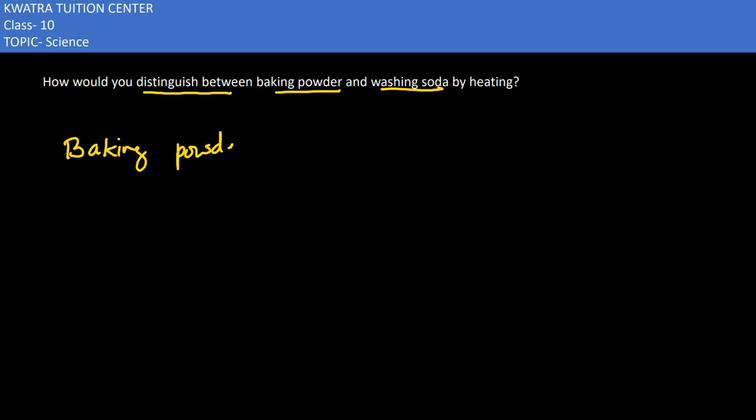It gives you carbon dioxide. Now we know how to check for carbon dioxide with the help of lime water, because lime water turns milky whenever carbon dioxide is passed through it.